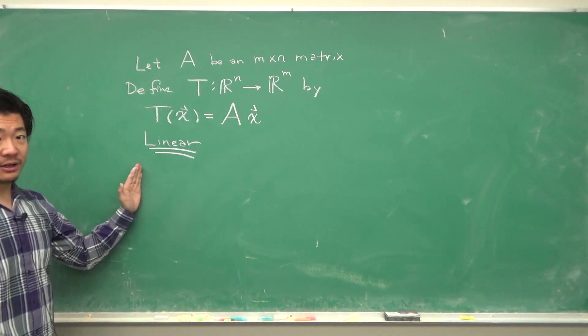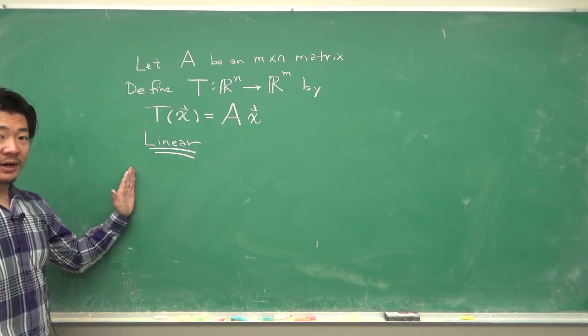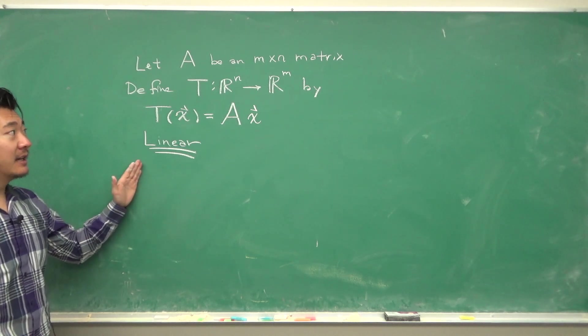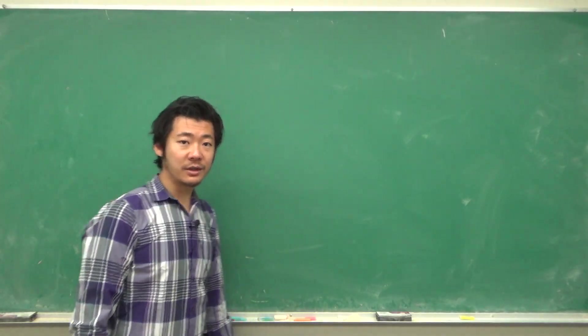Now, why is this particular example very important? It's because all linear transformations can be represented by a multiplication of a matrix and a vector. So how can we do such a thing?